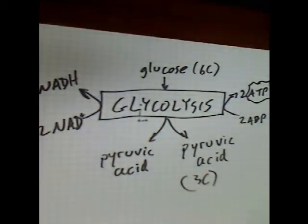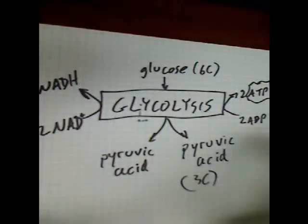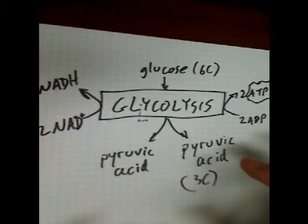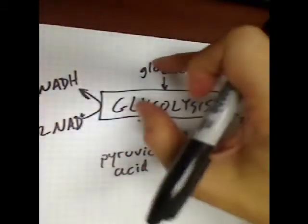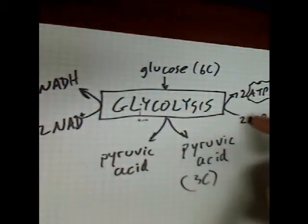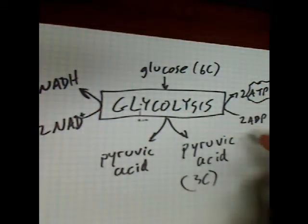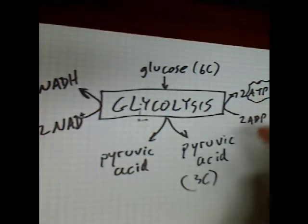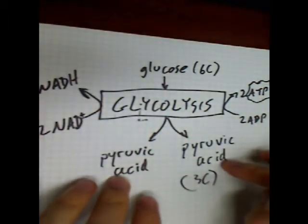As you're studying this for an introductory level class, this is how you should learn all these processes: what goes in, what comes out. What goes into glycolysis is glucose, some NADs, and some ADPs. What comes out are some NADHs, some ATPs, and a couple of pyruvic acids.